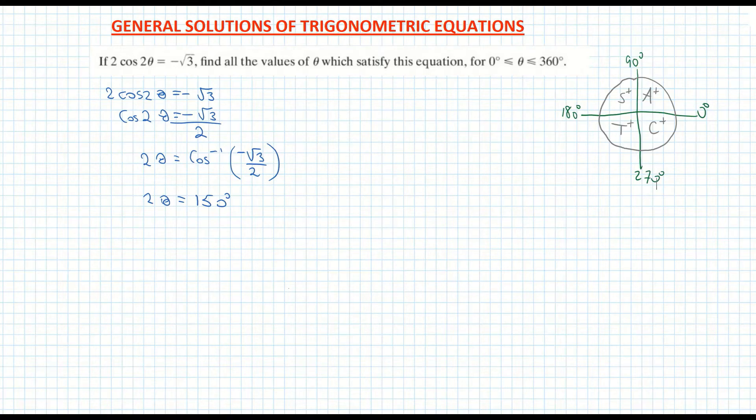And if I come back down to my solution here I have 2 theta is equal to 150 degrees. Now we need to find the full general solutions for 2 theta before we divide by 2. So that's an important step. We don't divide by 2 now and get 75 degrees. Yes it is a solution but in order to find all of the full general solutions we don't divide by 2 here.